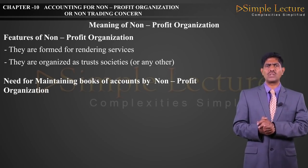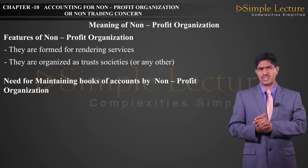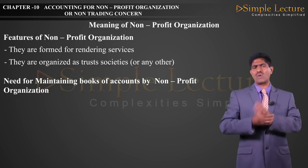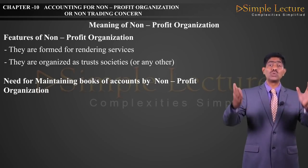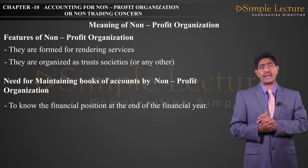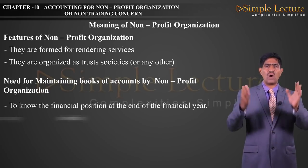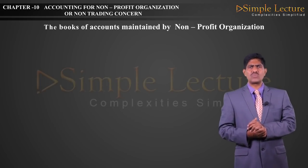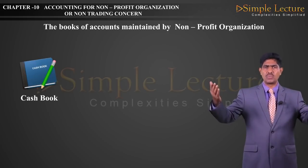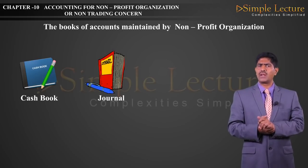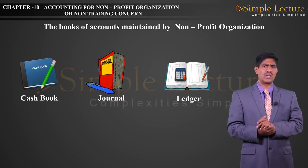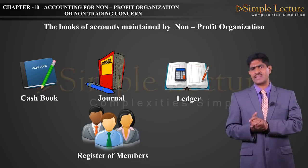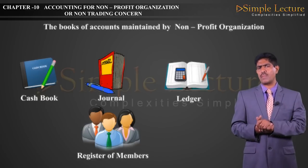Next comes the need for maintenance of books of accounts under Non-Trading Concern. Number one: to know the financial position of the Non-Trading Organization. Number two: to avoid misappropriation of funds. The books of accounts maintained are: cash book, journal, ledger, and register of members. The cash book is used to know cash operations — cash in and cash out.